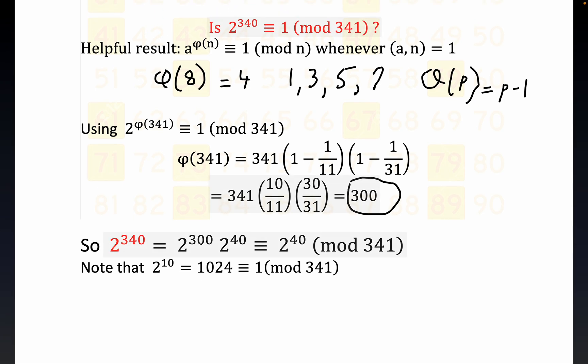See this part right here: 2 to the 300 is, according to this result, just according to this result right here - 2 to the 300, imagine the size of that number - but we have this result that tells us it's the same thing as 1. It's congruent to 1, and of course it's mod 341. I won't write that down, but 2 to the 300 is congruent to 1 mod 341.